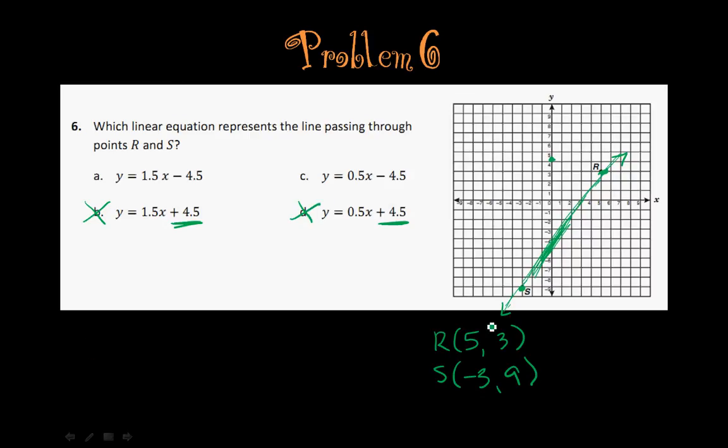Let's try A first. I'm going to start with point R. So we would plug 3 in for y and 5 in for x. So 1.5 times 5 is 7.5, and 7.5 subtract 4.5 gives you 3. So you can see that works out.